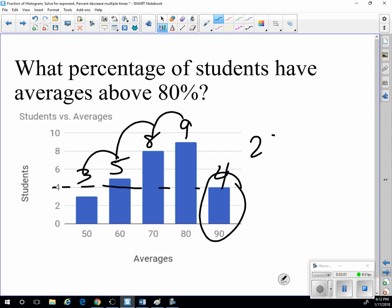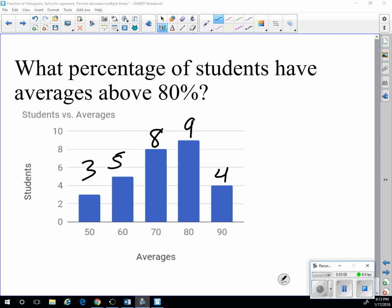plus 5 is 22, plus 3 is 25. So the total is 25 plus 4. So we have 29 total, and we have 4 that are above 80%. We have a bunch that are right at 80%. Well, there's 4 that are above. 4 divided by 29.